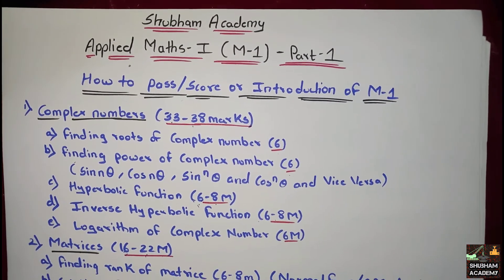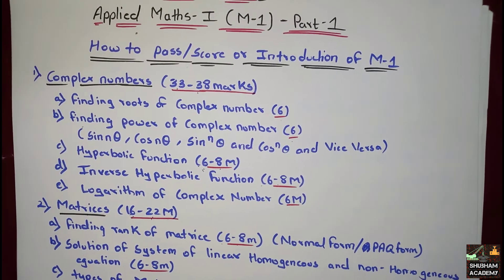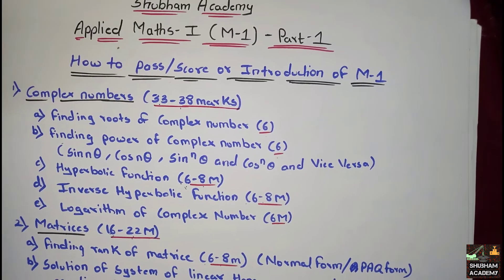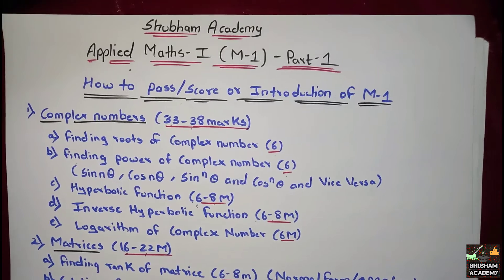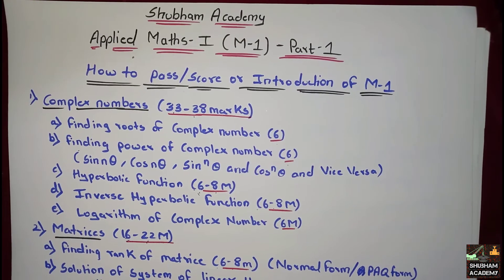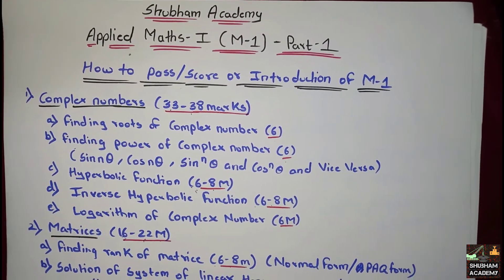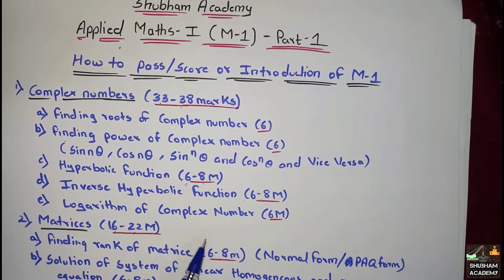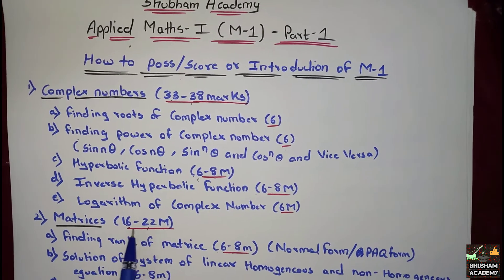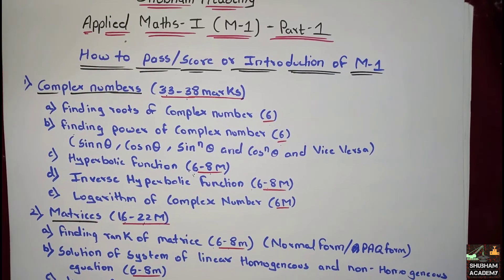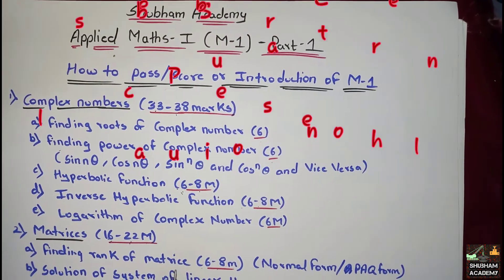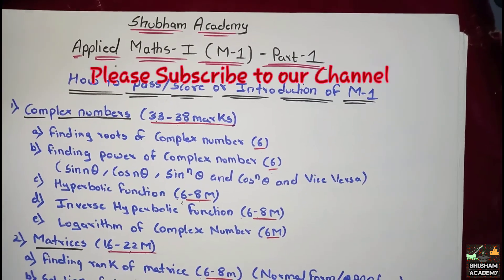Make sure the 40 marks worth of questions you attempt are topics you are confident about — not just ones where you solved 2-3 sums. If you select a topic, be so perfect at it that any question from it in the exam can be answered. You will find 10 to 15 numericals in the Kumbhojkar book. Plan your studies very well. If you like this video, please like, subscribe, and share with friends so they can also plan and score in M1. Thank you!